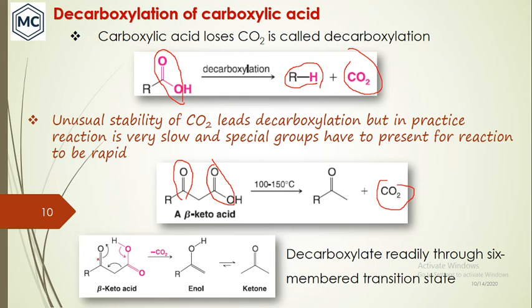The mechanism proceeds through a cyclic six-membered transition state. The CO₂ is released, the hydrogen transfers, electrons from the O-H bond shift toward the adjacent bond, that bond breaks, and CO₂ is eliminated. A double bond forms, giving an enol intermediate; the enol then undergoes keto-enol tautomerization (enol-to-ketone isomerization) to form the final ketone product.